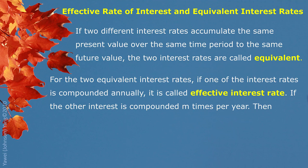For the two equivalent interest rates, if one of the interest rates is compounded annually, it is called effective interest rate. If the other interest is compounded m times per year, then they have a relationship as below. F is the effective interest rate; I is the periodic interest rate for the interest compounding m times a year.